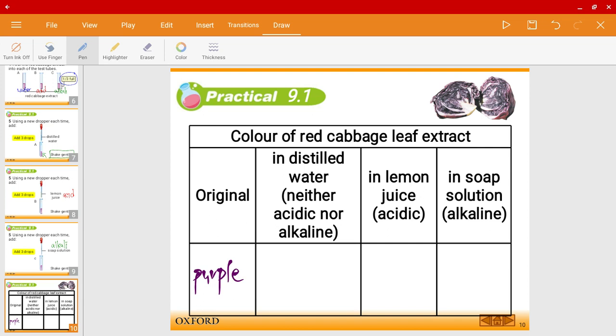How about in distilled water? Distilled water, which is test tube A, lemon juice is test tube B, soap solution is test tube C. How about in test tube A? Water is neither acidic nor alkaline. So that would mean the color would remain the same. The color remains the same.